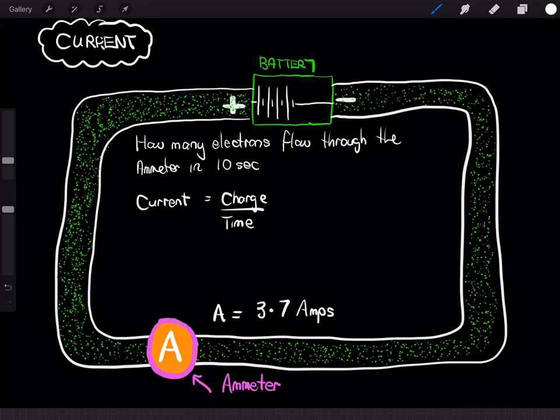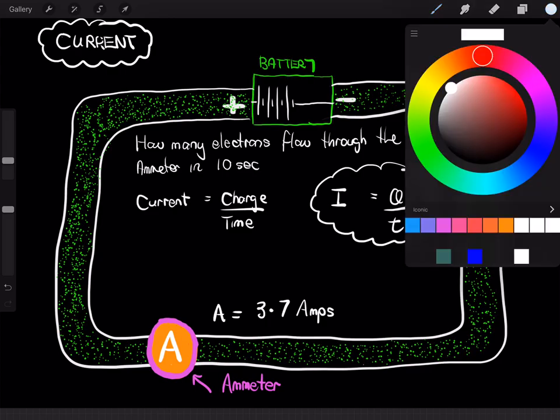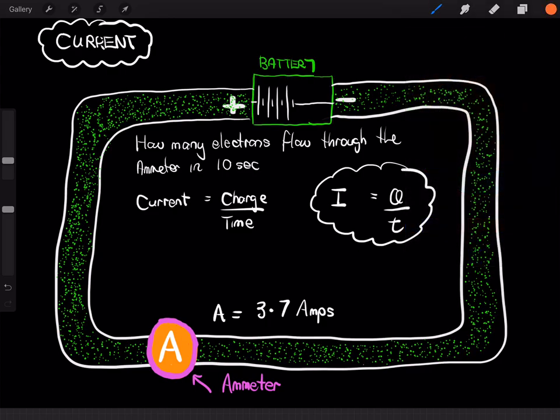So, the symbol for current is I, the symbol for charge is Q, and the symbol for time is T. So, there's our little formula, current equals charge divided by time. And, of course, current is measured in amps. And so, just make sure we're clear on these units. Current will be measured in amps, charge is measured in Coulombs, and time is measured in seconds.